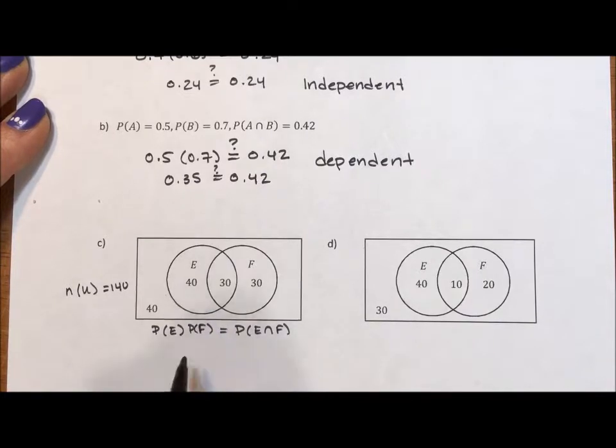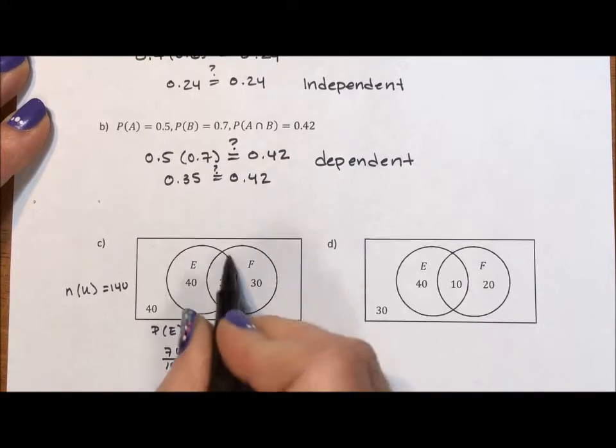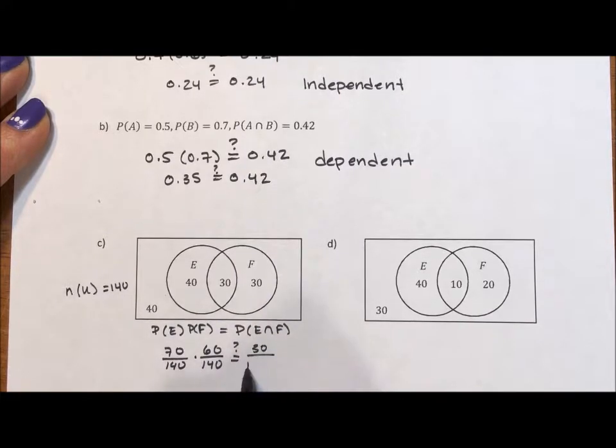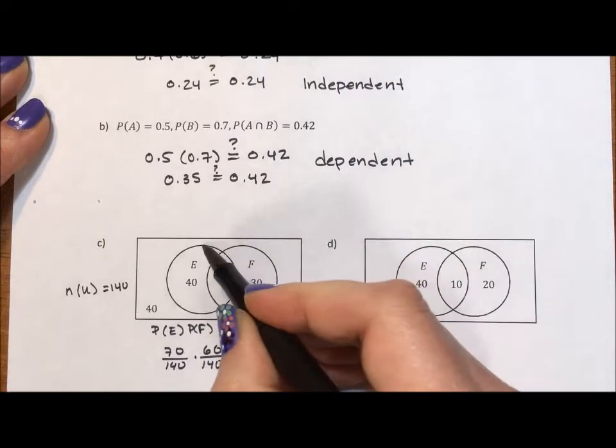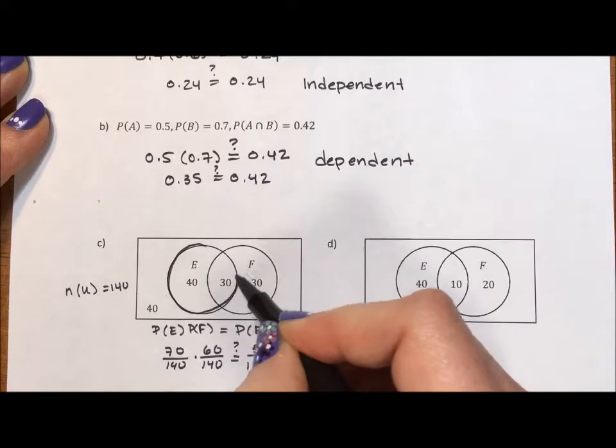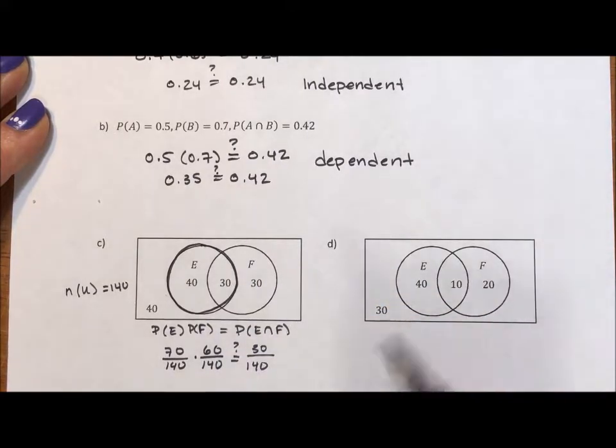So for E, we have 70 over 140. For F, we have 60 over 140. And for the intersection, we have 30 over 140. I want to mention that when I say E, I mean the entire circle of E, which is why I took 40 plus 30. For F, I mean the entire circle of F, which is why I took 30 plus 30.